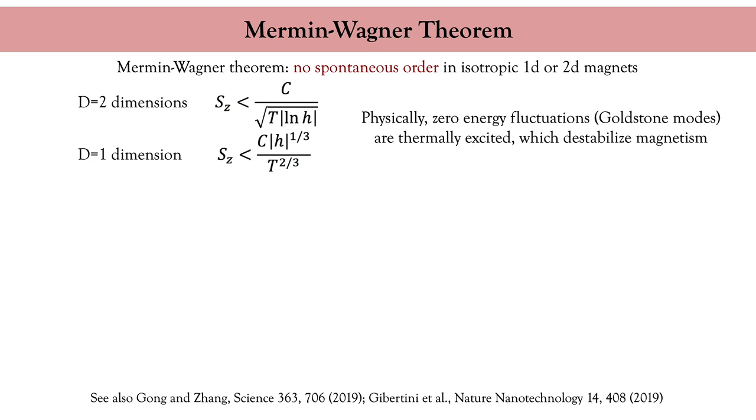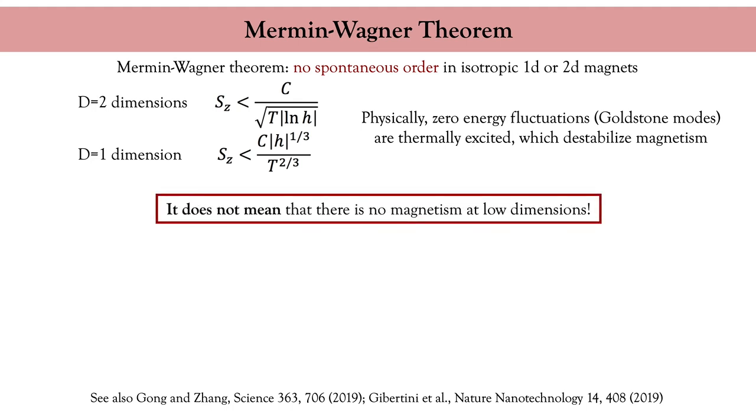But this doesn't mean that there is no magnetism in low dimension. To stabilize magnetism, what you need to do is simply to prevent these Goldstone modes from getting excited. This can be done by turning on the magneto-crystalline anisotropy. In this case the magnetic excitations can only be excited above a certain temperature, which then defines the ordering of the system.